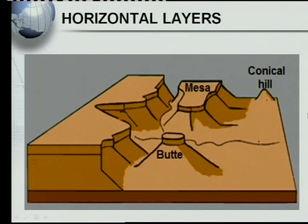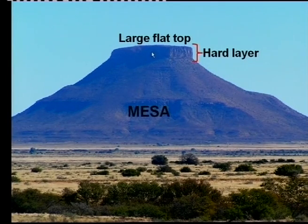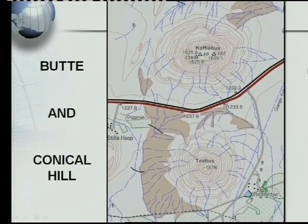This whole area, millions of years ago, was once at one height, then rivers started to flow, erosion took place, and it broke up into different sized blocks. The largest blocks form the mesa — it has a large flat top with a hard layer called the cap rock on top. On a topographical map, you can see the large flat top and the steep sides shown by closely-spaced contours.